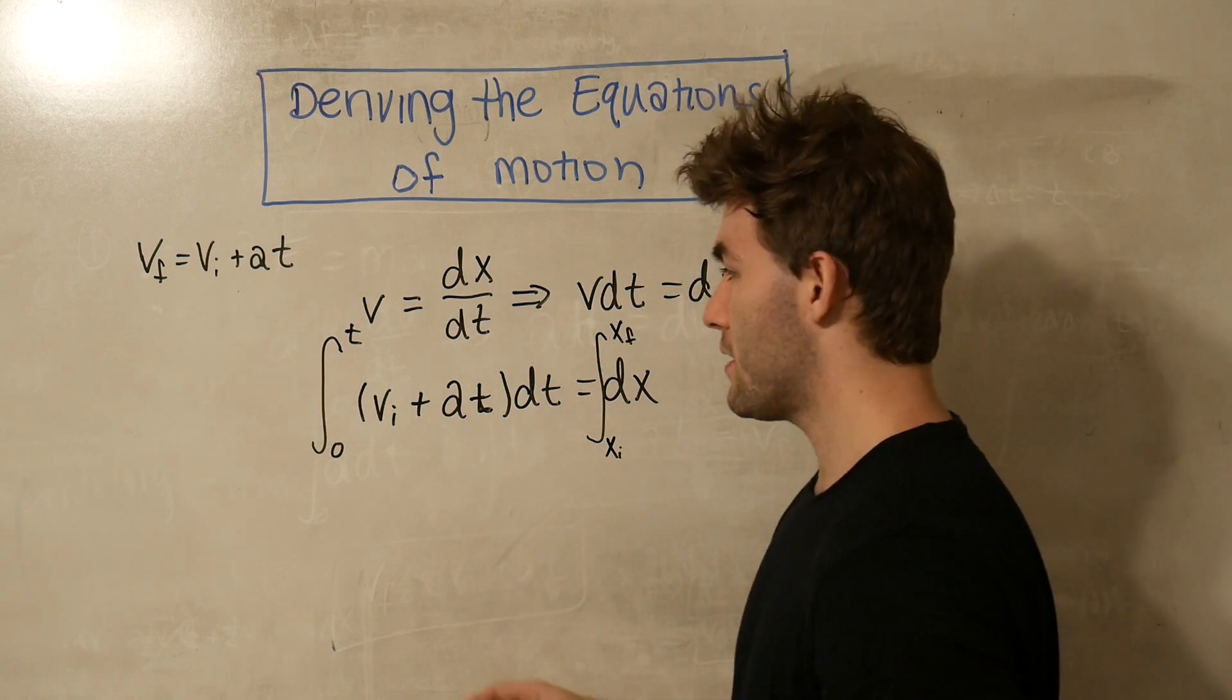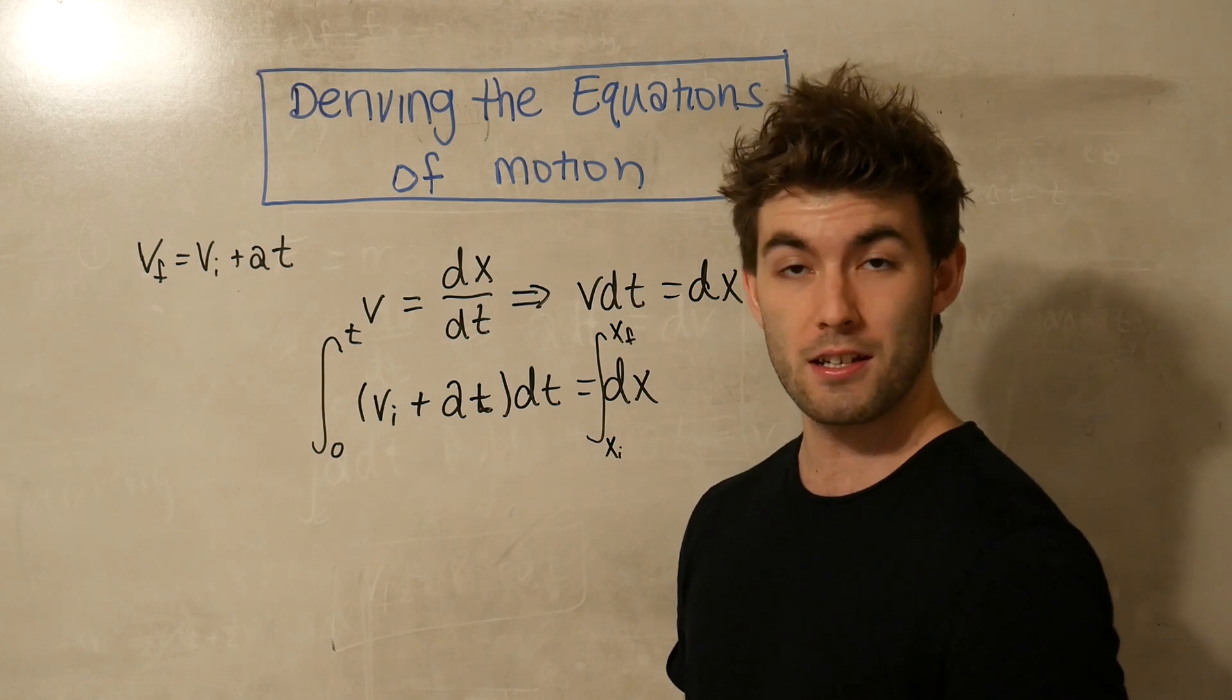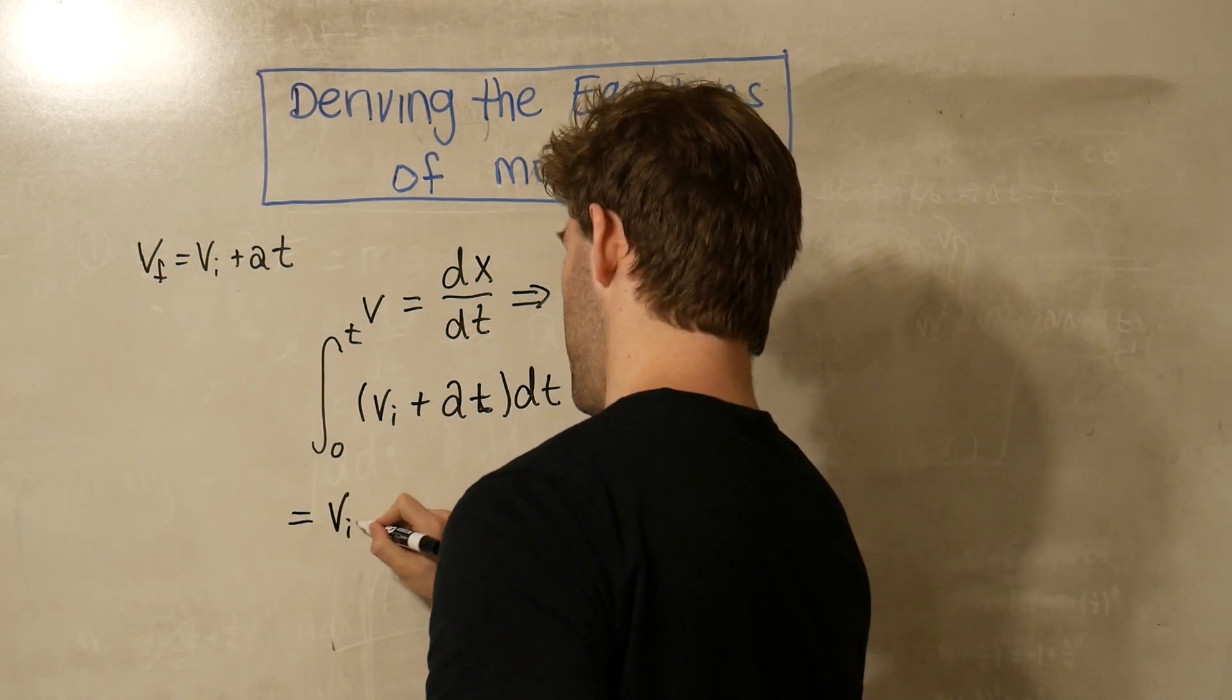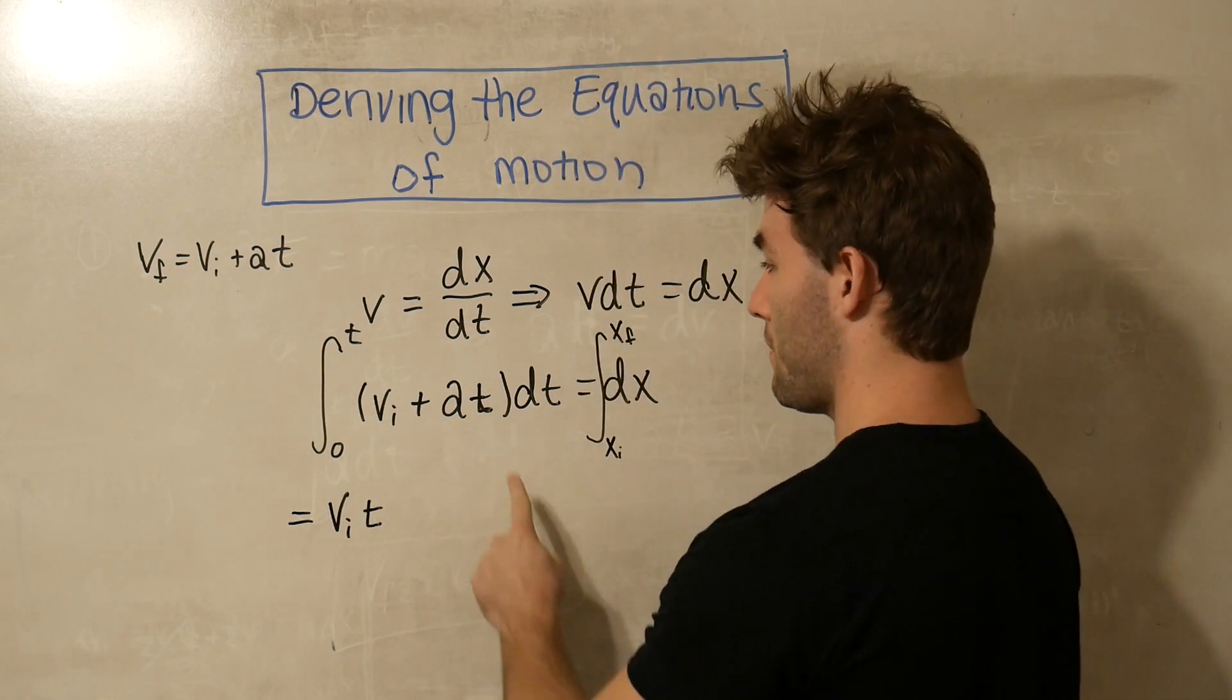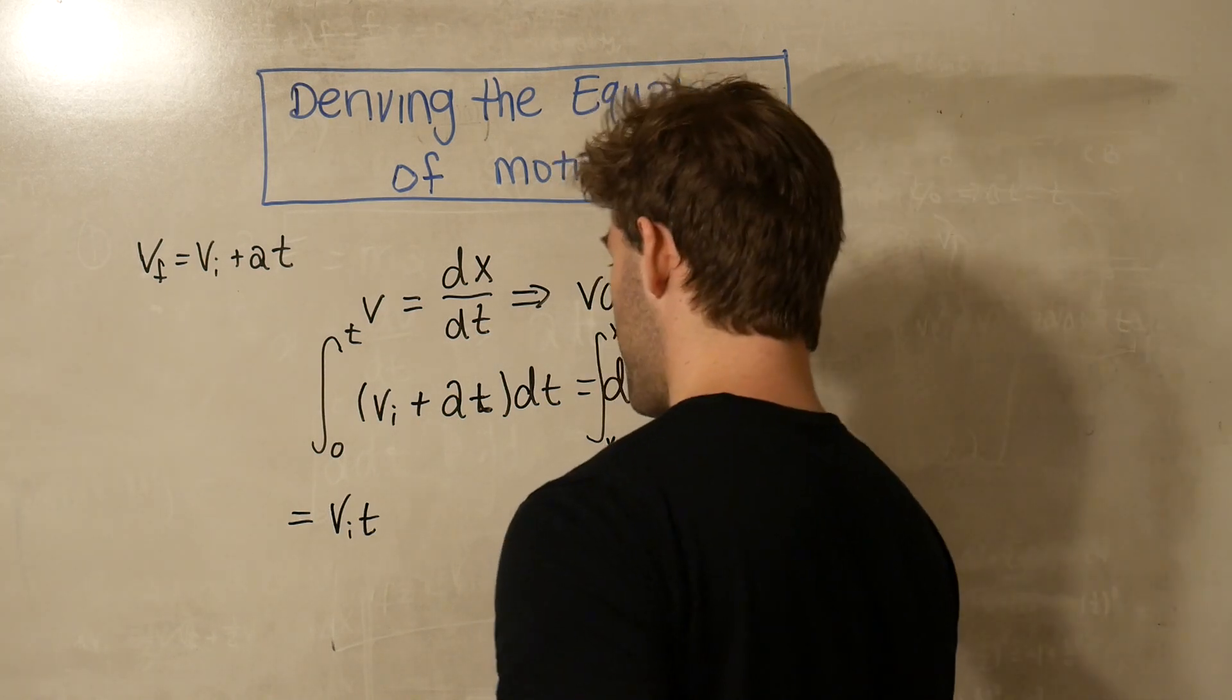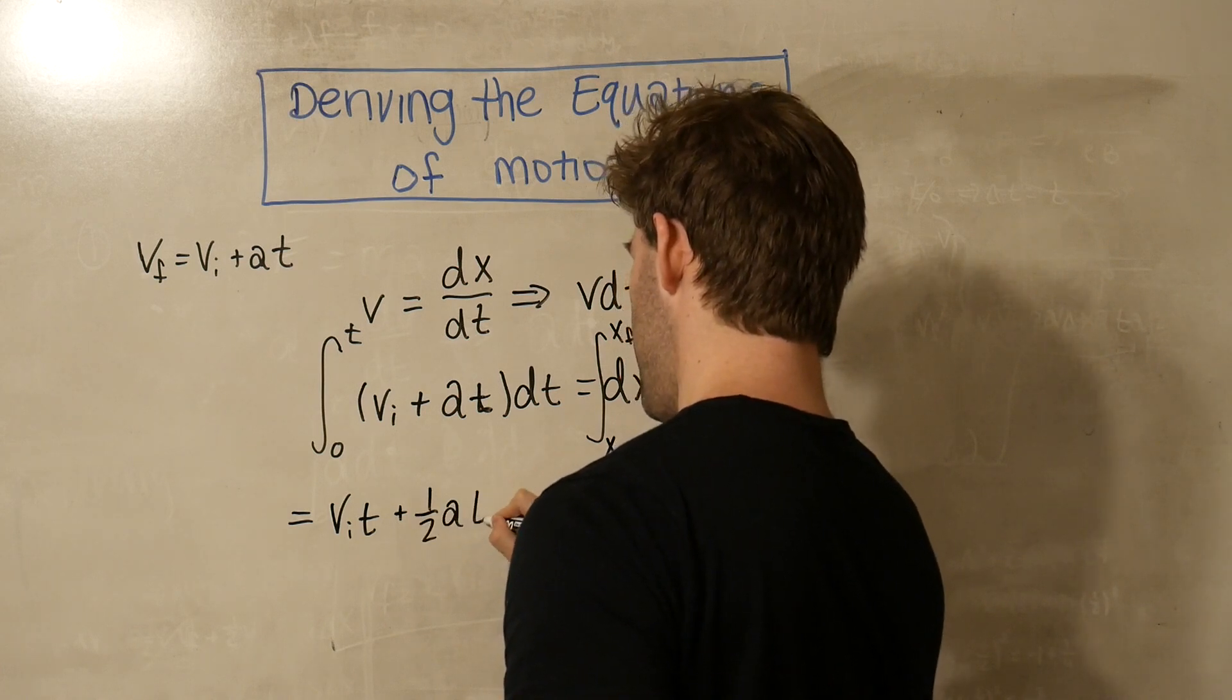Now the vi doesn't have a t attached to it, so that's just going to be the integral of vi with respect to t is just going to be vt. We already have the t parameter in this term here, so the integral of t with respect to t is going to be t squared over 2. So this term is going to be plus one-half at squared.